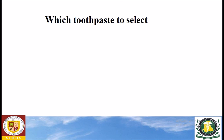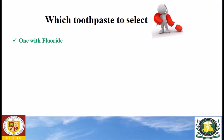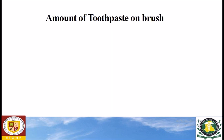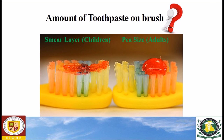Which toothpaste should you select? The toothpaste must be one with fluoride. The ingredients must be mentioned on the back, or it must be non-medicated. Regarding the amount of toothpaste: for children, a smear layer should be used, and for adults, a pea-size amount must be used.